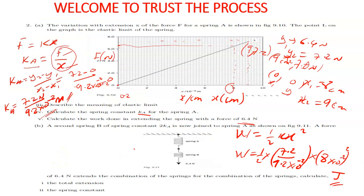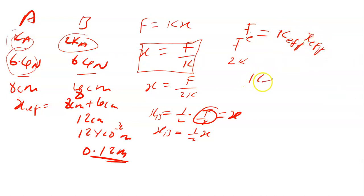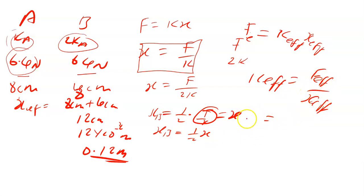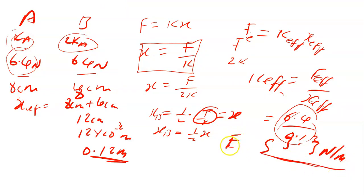Now calculate the spring constant. The effective force equals the effective spring constant multiplied by the effective extension. So the effective spring constant equals the effective force over the effective extension, which is 6.4 over 0.12. When you calculate this, you get approximately 53.3 newtons per meter as the effective spring constant.